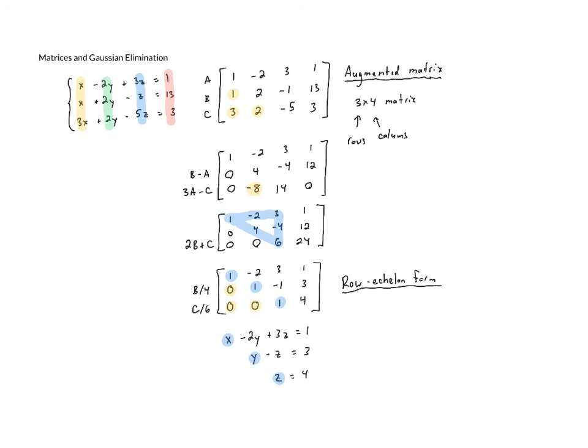So we've got z equals 4. If we plug that in to this equation before it, that's going to be y minus 4 equals 3. If we add 4 to both sides, y equals 7. And then we can plug that into the first equation. So we've got x minus 2 times y, which is 2 times 7 plus 3 times z, which is 3 times 4 equals 1.